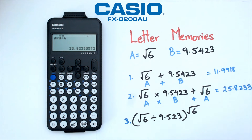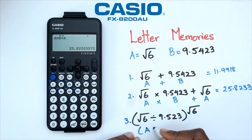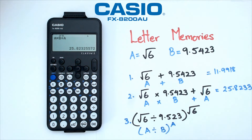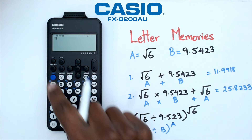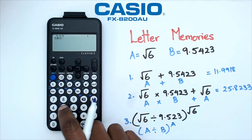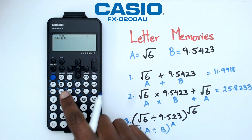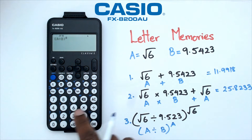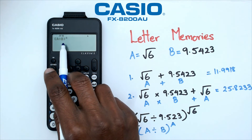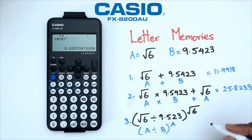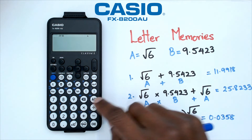Question number three is bracket A divided by B close bracket to the power of A. I go Shift four — which is A — divided by Shift five — which is B — close bracket, then the power button, then Shift four which is A again. This calculates square root of six divided by nine point five four two three, to the power of square root of six, and the answer is zero point zero three five eight.